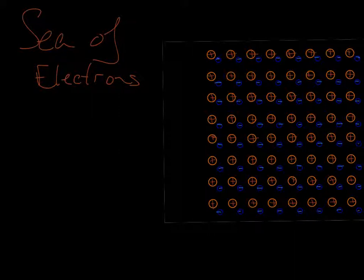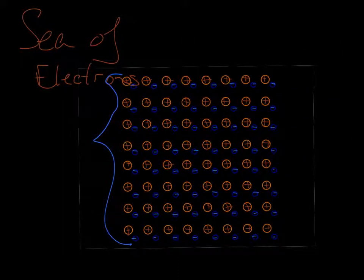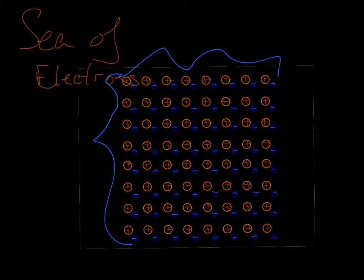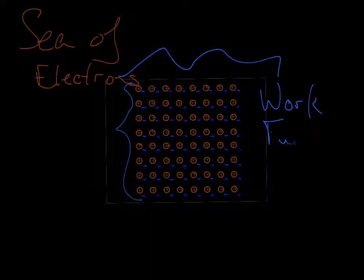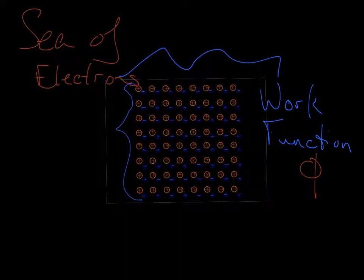This results in a lot of different nice properties, but one of the things we're interested in for this metal is what happens when we get near the surface — anywhere around these things. In order for an electron to leave the surface of the metal, it has to overcome some energetic requirements. What I mean by that is that it has to overcome what we call the work function. The work function is the energy it takes to remove an electron from the surface of the metal, and that's going to be a really important thing as we move forward.